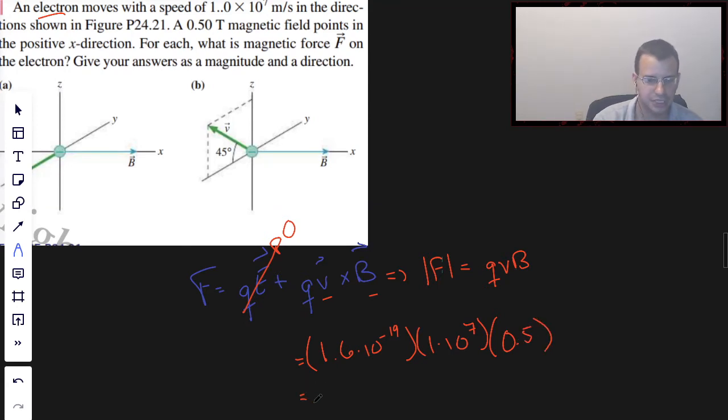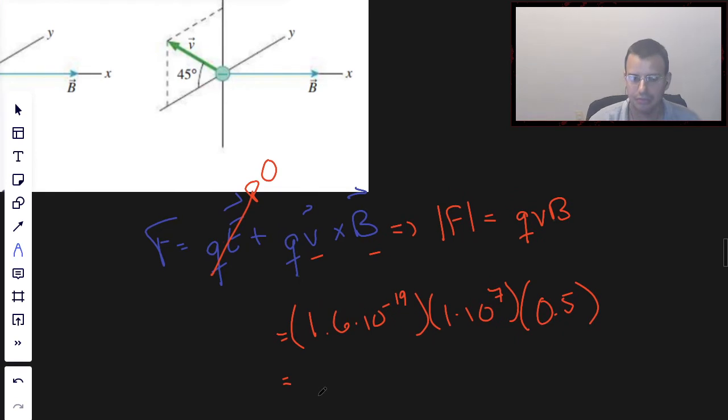So if I was a better person, I could do this in my head. Can I do this in my head? So 0.8, because 0.5 times 1.6, times 10... negative 19 times 10^7 is times 10^-12, which is the same as... wait a sec.